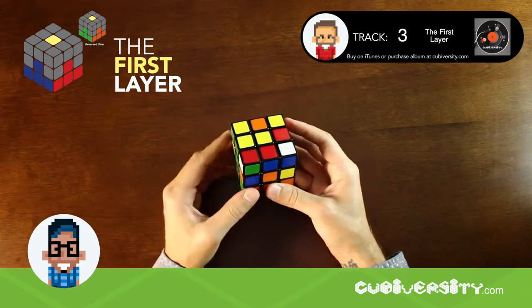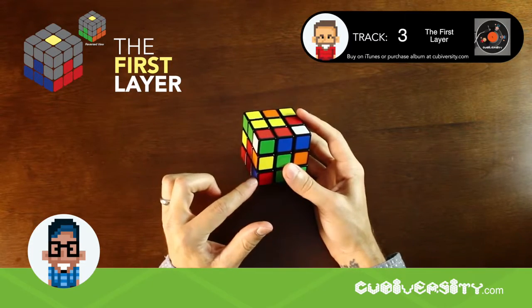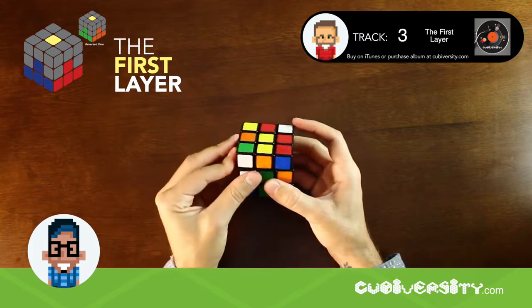Here's our green, red, white piece. Move this cubie over the correct corner where it will end up and perform the same algorithm. L prime, U prime, L.